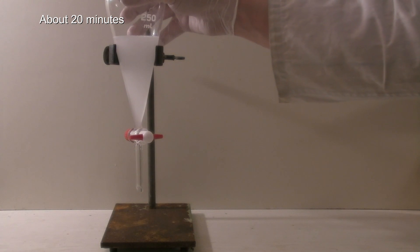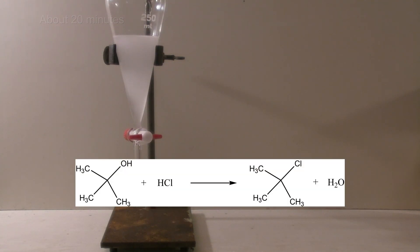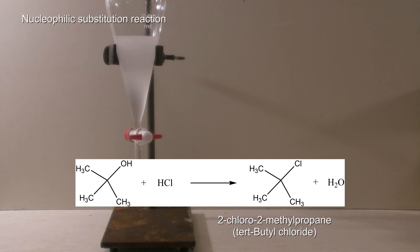While shaking, the following reaction takes place. The tertiary butanol reacts with the hydrochloric acid to form 2-chloro-2-methylpropane or tertiary butyl chloride and water. This is a nucleophilic substitution reaction. More precisely, it's an SN1 reaction.